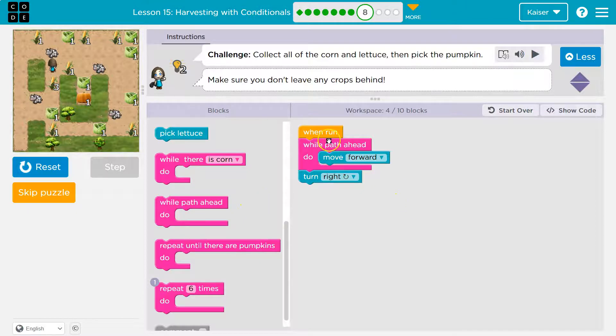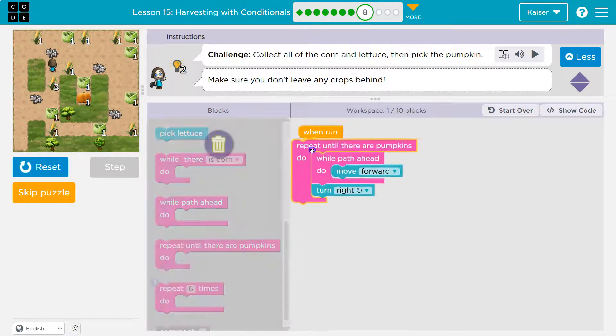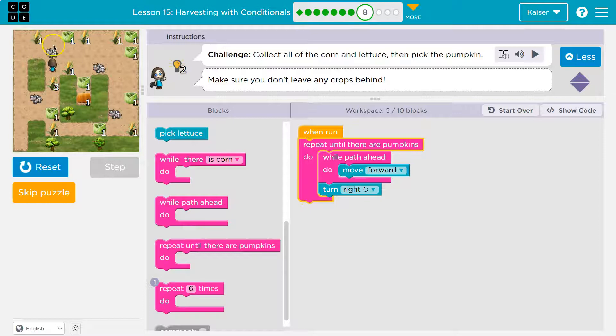Now, do I want to keep repeating this while there's a path ahead? Or until there are pumpkins? I wonder if both of these would work. But it looks like the end of the track is pumpkin, right? So maybe I want to keep doing this as long as I'm not at a pumpkin. So I bet that will get me to the end. Now, what about picking all this stuff up?